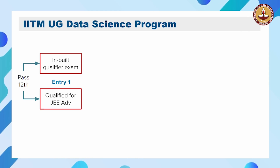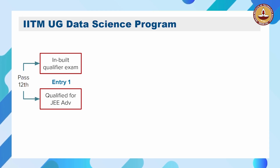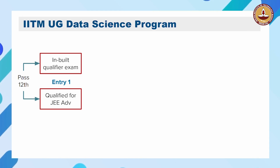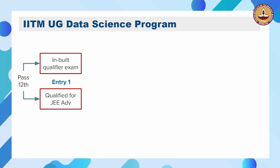The second process is for those who do some coaching or go through the JEE process. If you wrote JEE Mains and qualified for JEE Advanced — remember, you do not even need to write JEE Advanced — if you qualify for JEE Advanced, then you gain automatic admission into IITM's UG Data Science program. That is the beauty of this program: a very simple admission process, really open for a wide range of people and backgrounds.